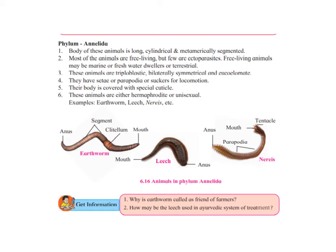Leeches are also used in the Ayurvedic system of treatment. They are used in blood purification, and sometimes in cases of high blood pressure and certain blood-related conditions. They suck out impure blood from a particular place on the patient's body. The anti-coagulant present in the saliva of leech inhibits coagulation of blood, making the blood thinner. This allows blood to flow freely through vessels and helps dissolve clots around the vessel.